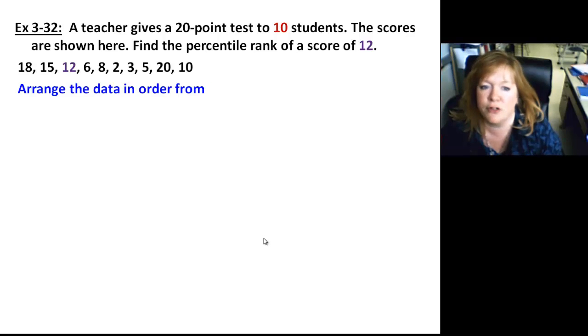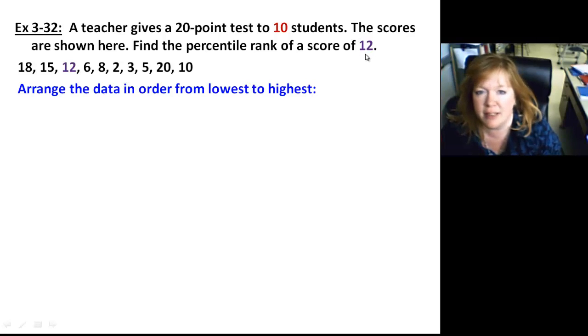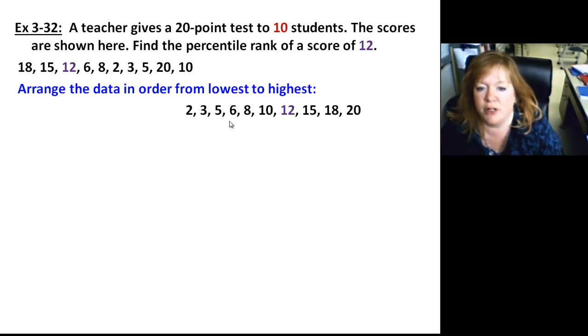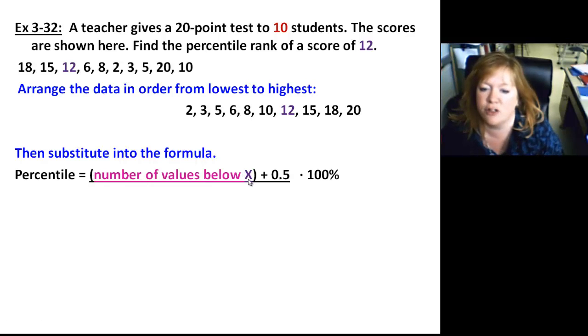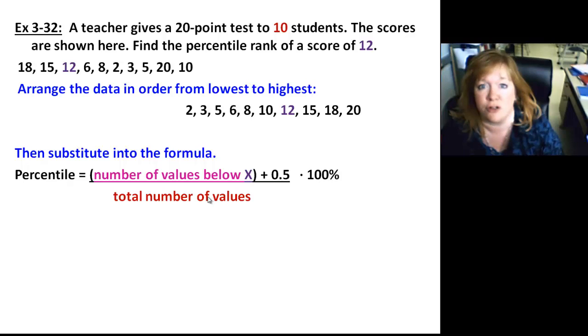So first step here is going to be to arrange the data in lowest to highest. A teacher gives a 20-point test to 10 students. Scores are shown. Find the percentile rank of 12. This is how they do your ACT tests and that kind of stuff. So here's all the scores of the data. We arrange them from low to high. Substitute it in the formula. You just have to know a couple things: number of values below the desired data value and how many number of values you have.